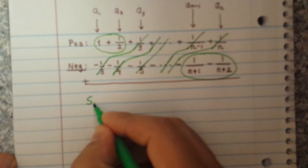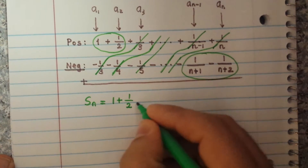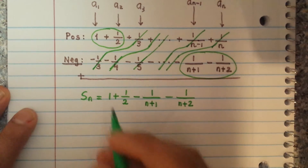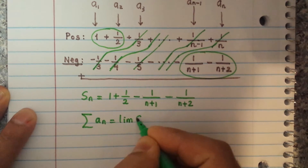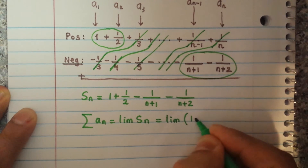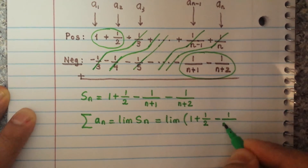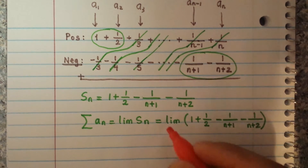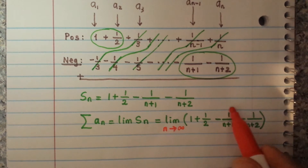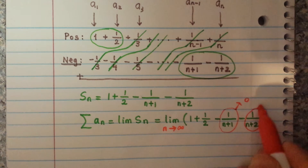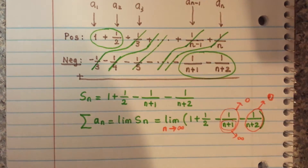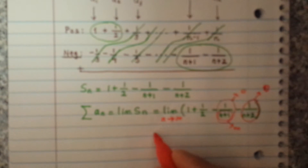Adding them together, Sn equals 1 plus 1 over 2 minus 1 over (n plus 1) minus 1 over (n plus 2). The sum of the series equals the limit of Sn as n goes to infinity, which is the limit of 1 plus 1 over 2 minus 1 over (n plus 1) minus 1 over (n plus 2). As n goes to infinity, both 1 over (n plus 1) and 1 over (n plus 2) go to 0 since the denominators go to infinity. So the limit is simply 1 plus 1 over 2, which equals 3 halves.